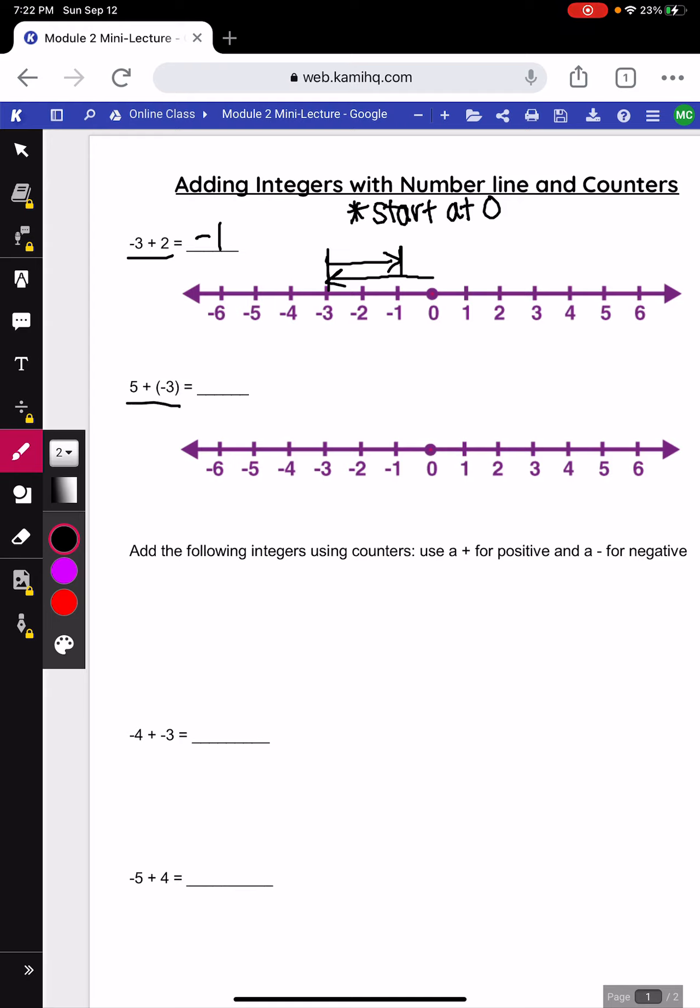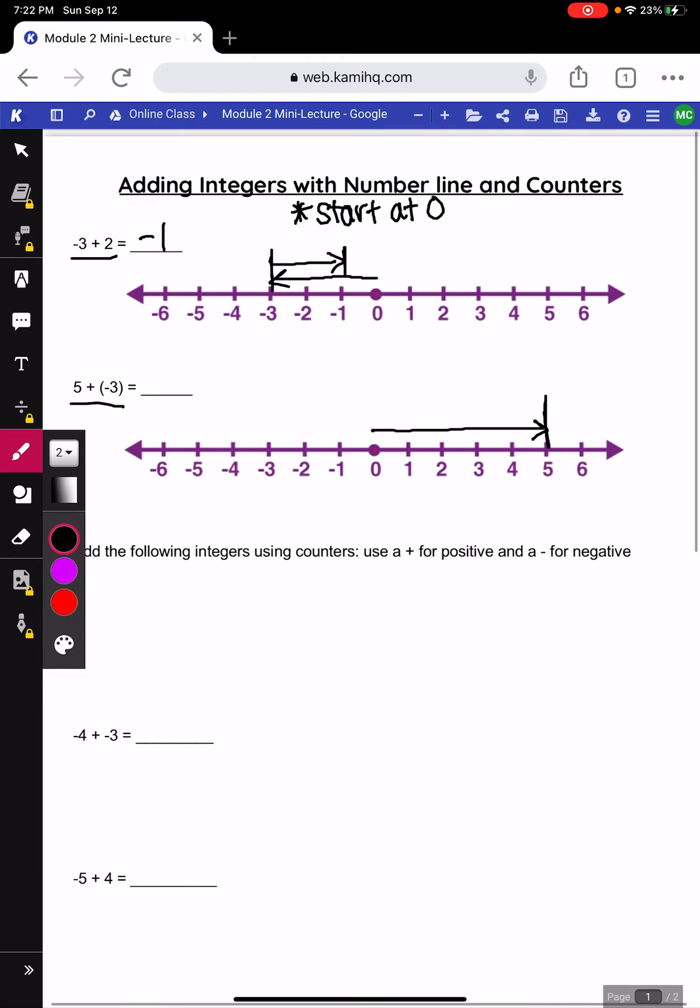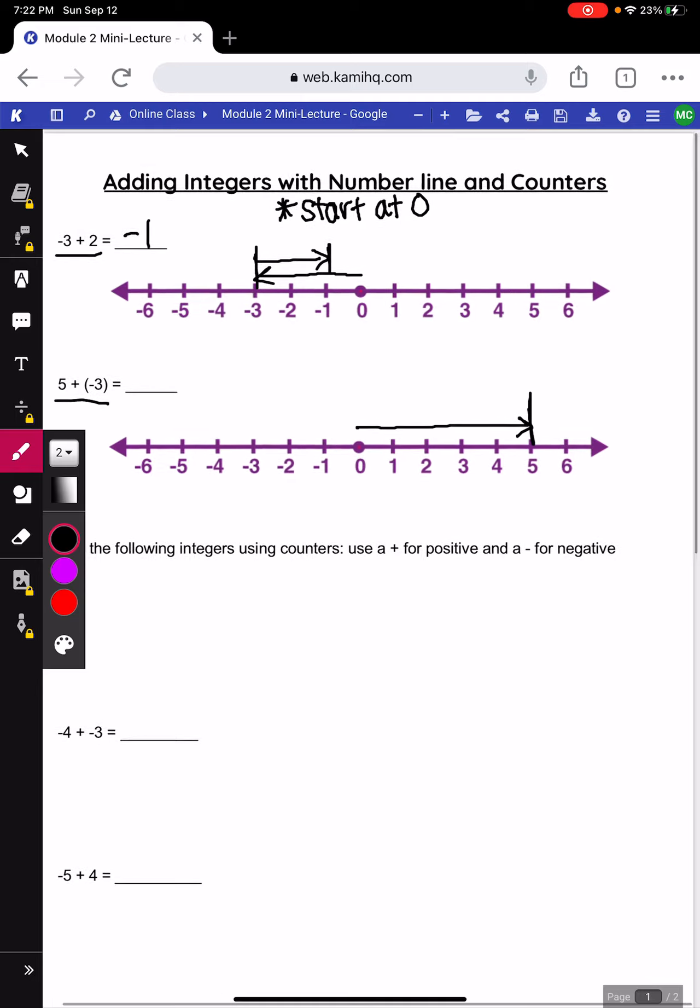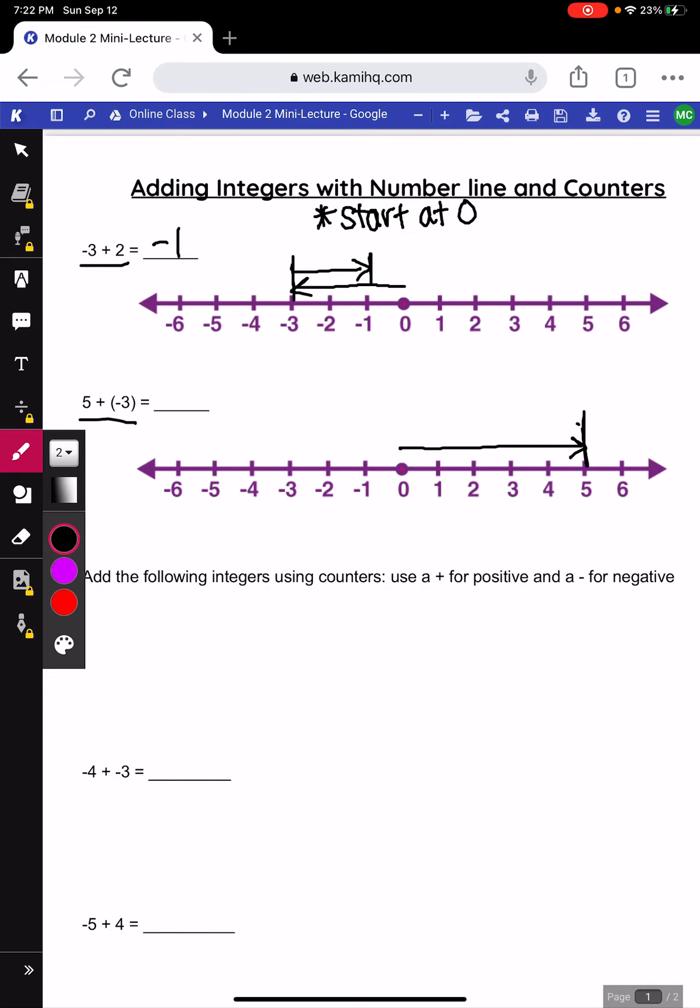5 plus negative 3. Start at 0, go to the first number, stop there. This time I'm adding a negative 3 so I need to go to the left 3, which will get me to positive 2.